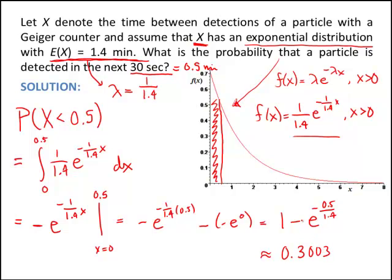And if we calculate this, this is around 0.3003. So in this first problem, we were looking at the probability that a particle is detected within the first half a minute. We're able to compute it because we're given the mean of the exponential random variable, which tells us the parameter. So now we're going to continue this problem and show what the memoryless property means.